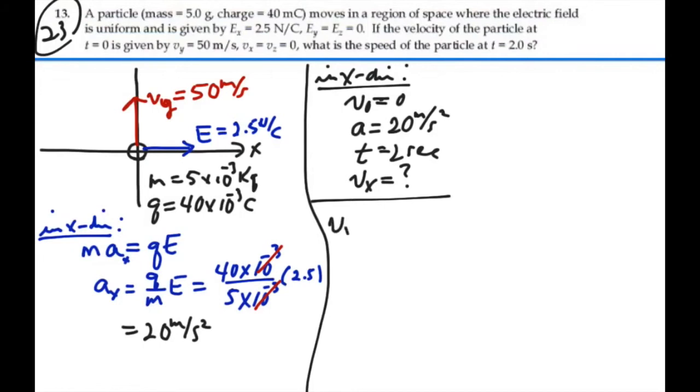And we have our final x velocity is equal to our initial velocity, plus acceleration times time. In this case, our initial velocity is 0 in the x direction. So that's going to equal 20 meters per second squared times 2 seconds, or 40 meters per second.